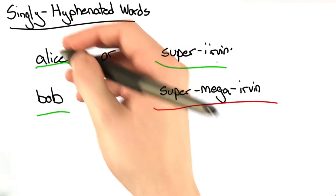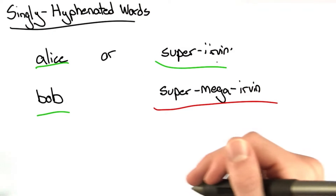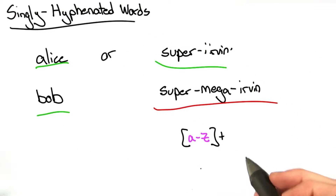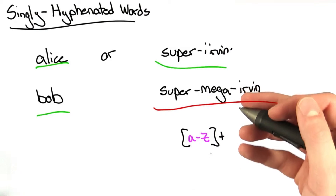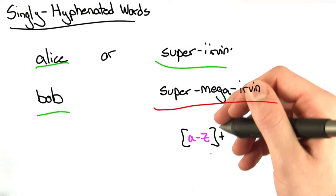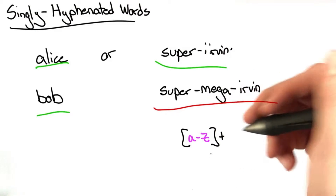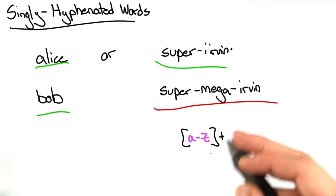First, let's do the one that matches a normal word. This regular expression will match one or more occurrences of lowercase letters.